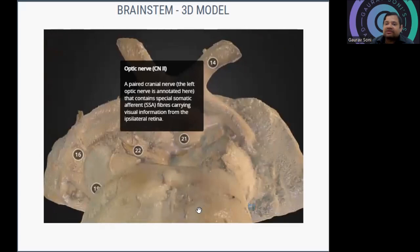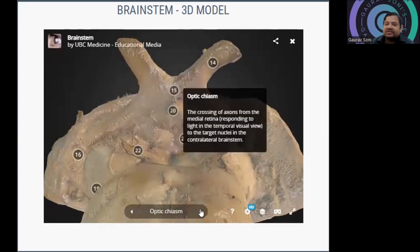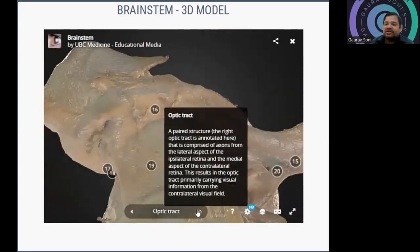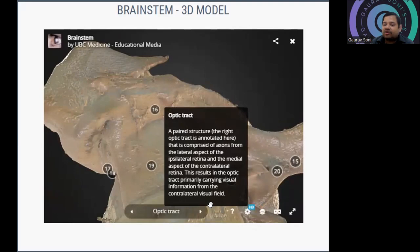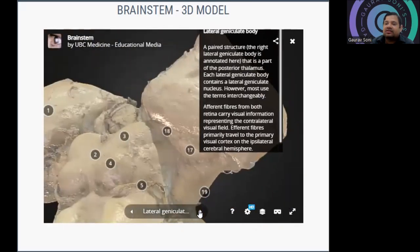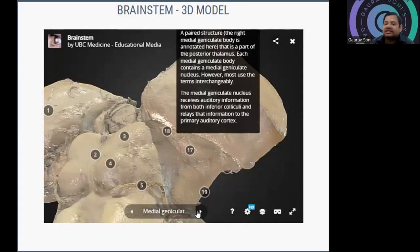Cranial nerve 2 — the optic nerve — carries information from the axons of the retina. Then the optic chiasma, where the axons of the medial retina cross the midline. The optic tract (paired structure) carries information about the contralateral visual field. The lateral geniculate body contains the lateral geniculate nucleus and represents the visual field — the lateral geniculate is for visual information. The medial geniculate body is for auditory cortex information.